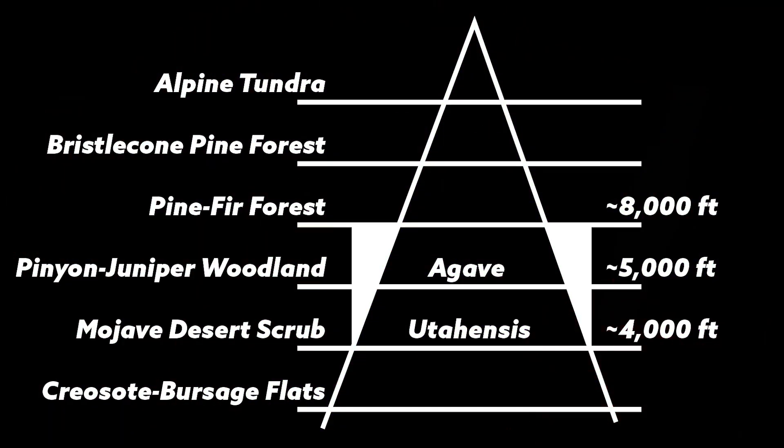The area around Las Vegas actually includes approximately six different types of these life zones. The lowest we typically see here are the creosote bursage flats, which occur below 4,000 feet, are extremely hot — typically up to and beyond 110 degrees Fahrenheit in the summer — and you generally don't see much wildlife or plant life other than bursage and creosote shrubs. Agave utahensis does not grow down this low.